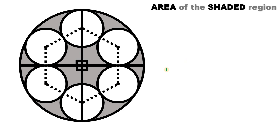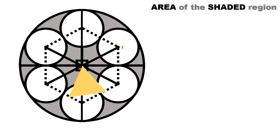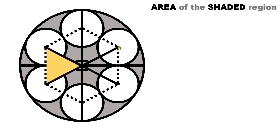Now, what do we know about a regular hexagon? If we connect the opposite vertices, we create six equilateral triangles — and they are also equiangular triangles.